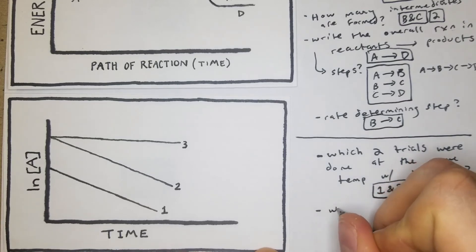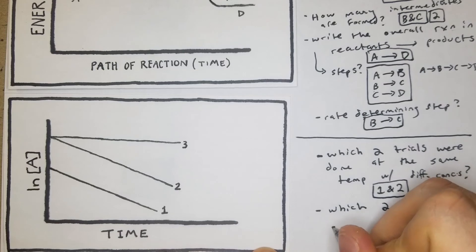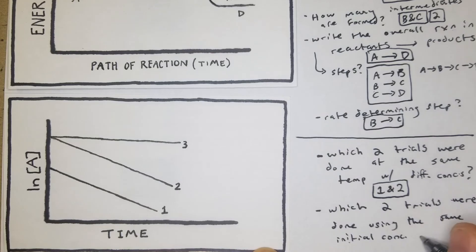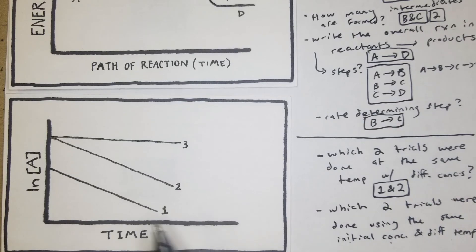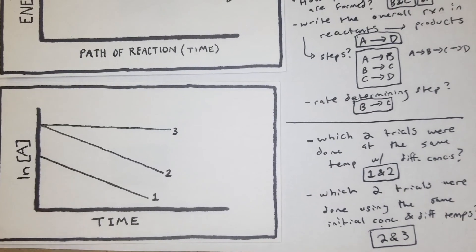The next question asks which two trials were done using the same initial concentration but different temperatures. This is similar but slightly simpler — we're looking for different slopes but the same starting point on the y-axis. That's going to be trials 2 and 3.